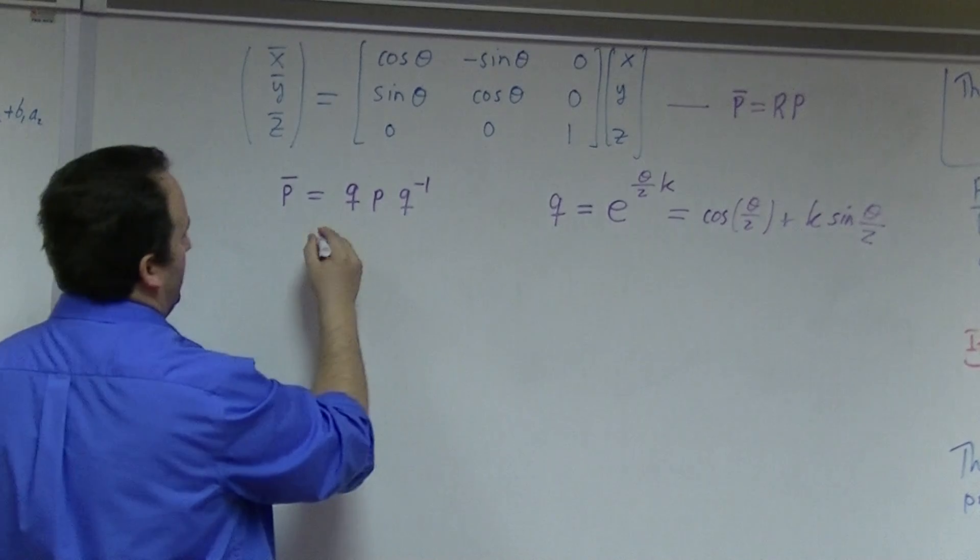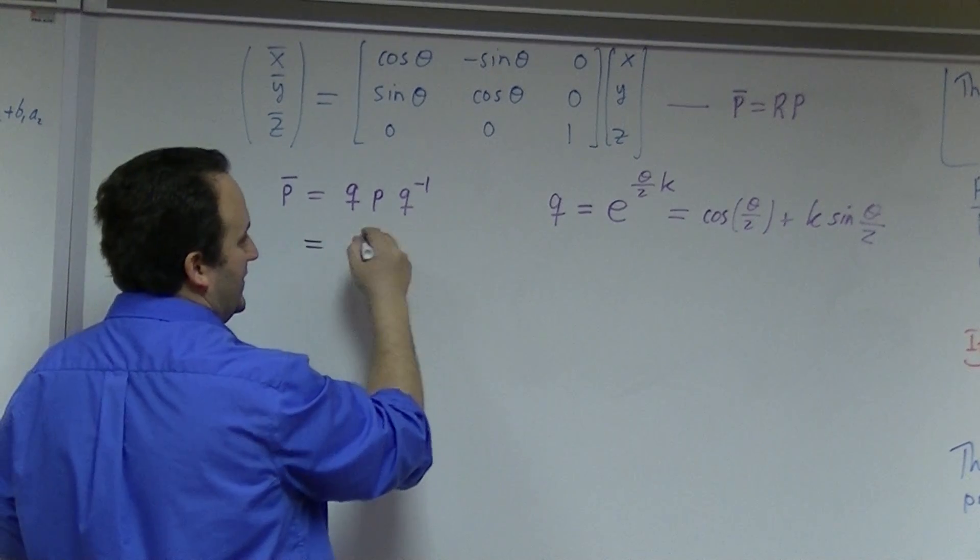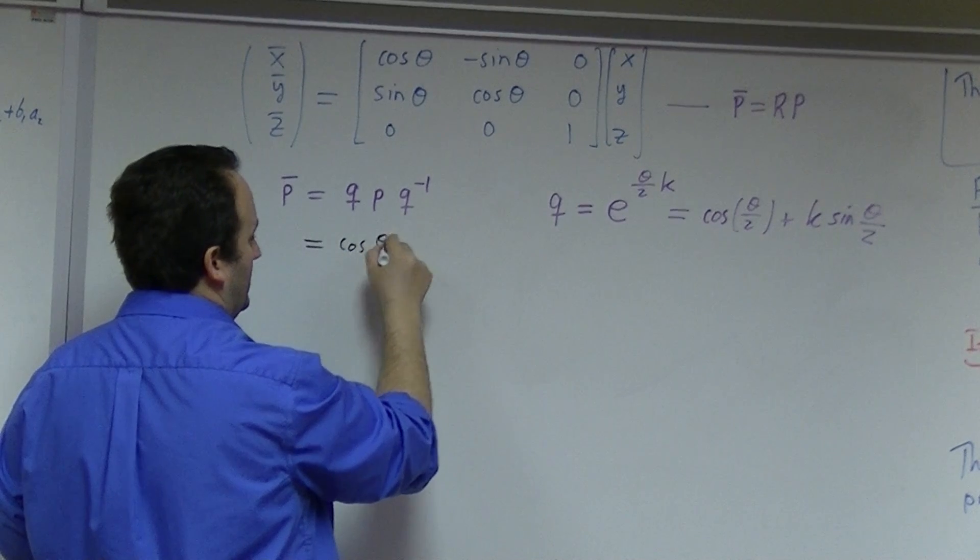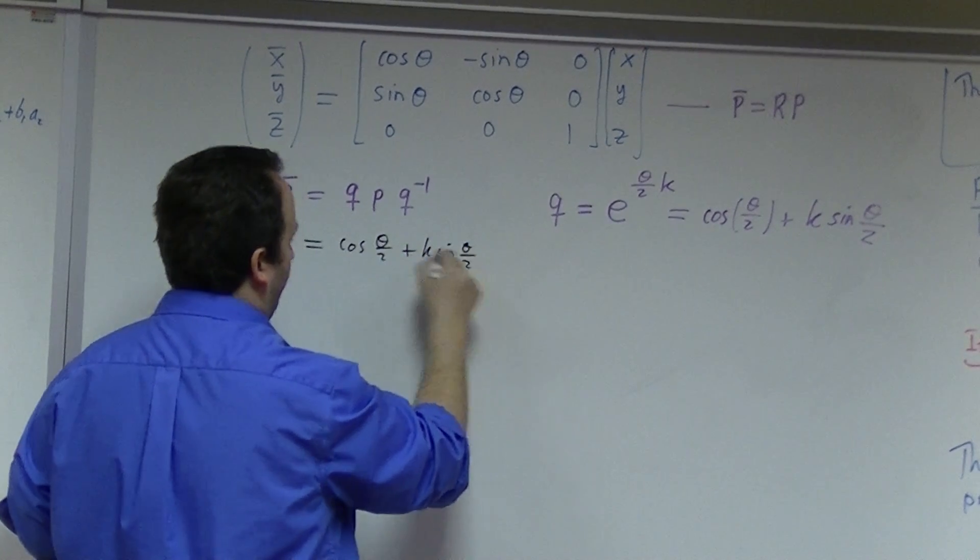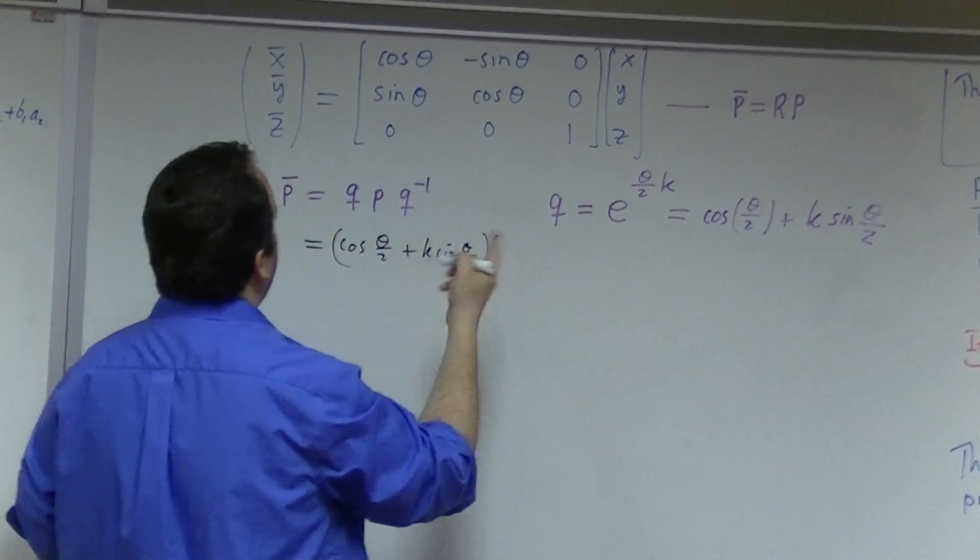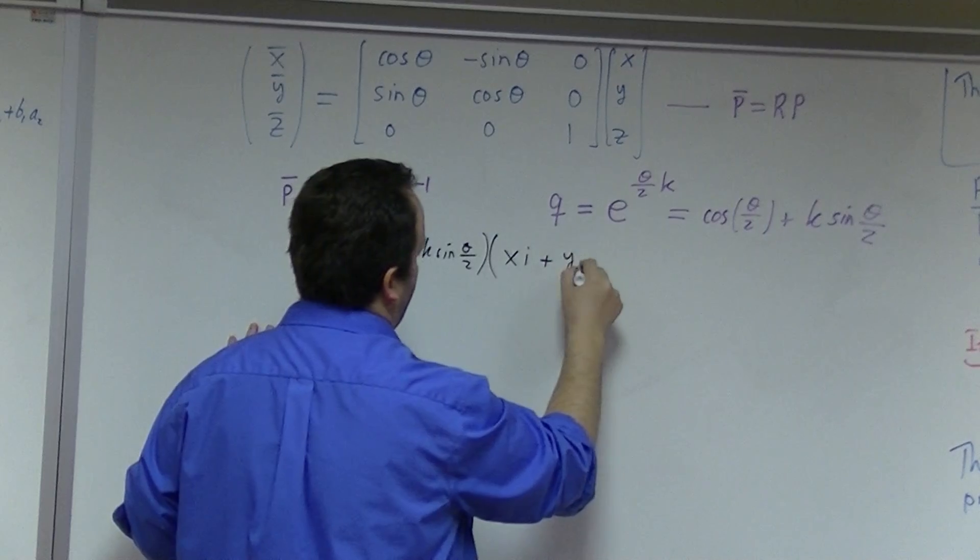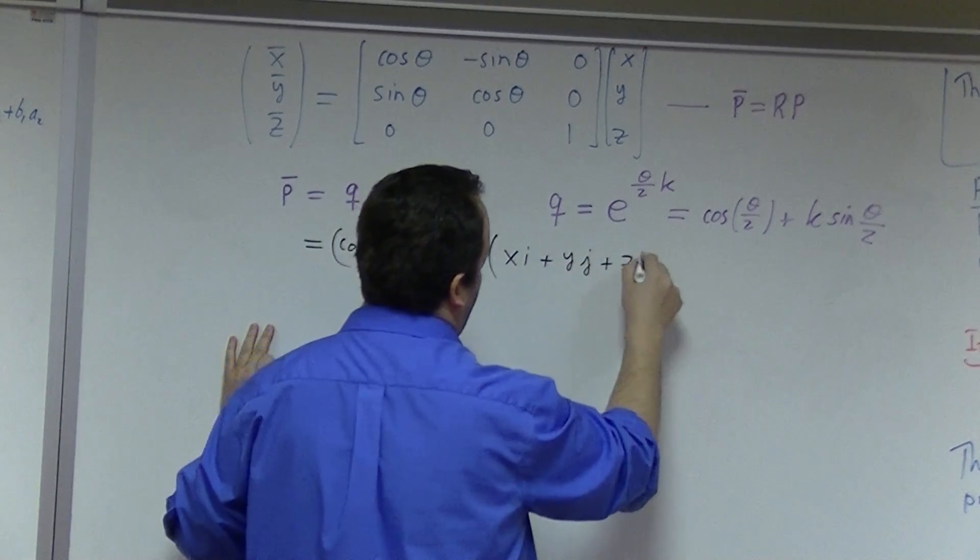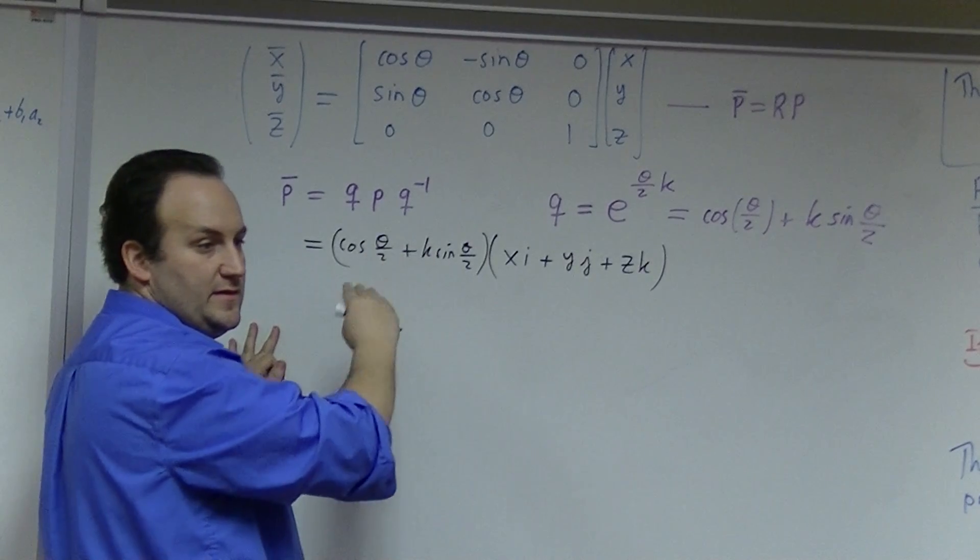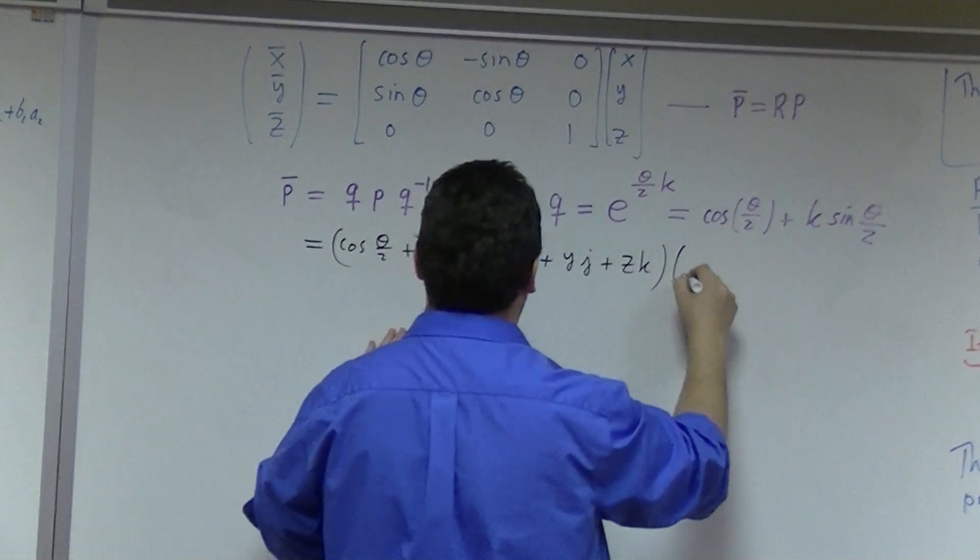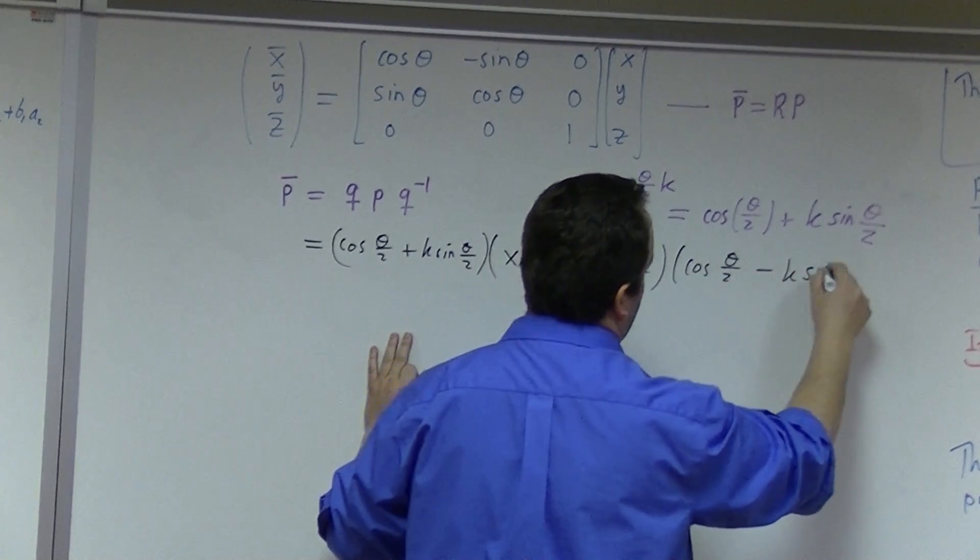So this, what is Q inverse? Well, it's just the conjugate. So what this is, is cosine theta over 2 plus k sine theta over 2. So the point P is just xi plus yj plus zk. That's an arbitrary point. It's in the, with the versers. And then over here, you've got cosine theta over 2 minus k sine theta over 2.